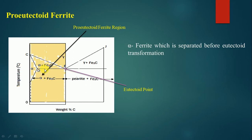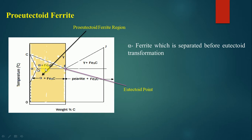As the temperature decreases further, the amount of alpha ferrite is likely to increase. The composition of alpha varies along the line CD, and the percentage of gamma would be varying along the corresponding side, while percentage of alpha ferrite varies along the CD line.